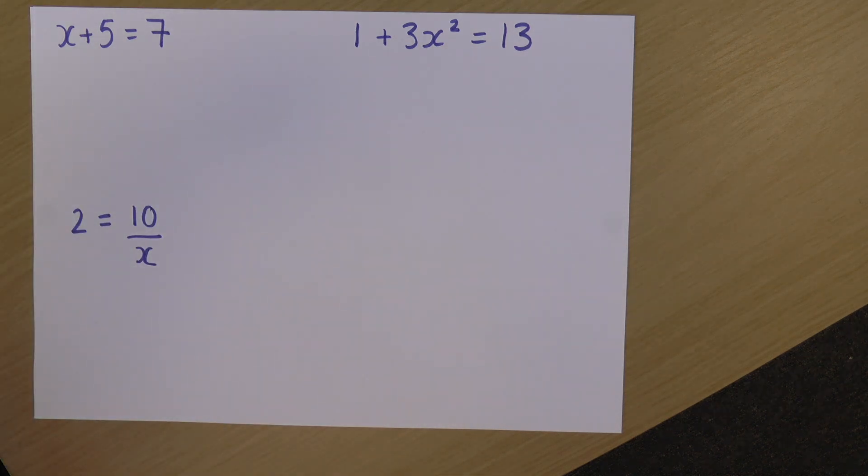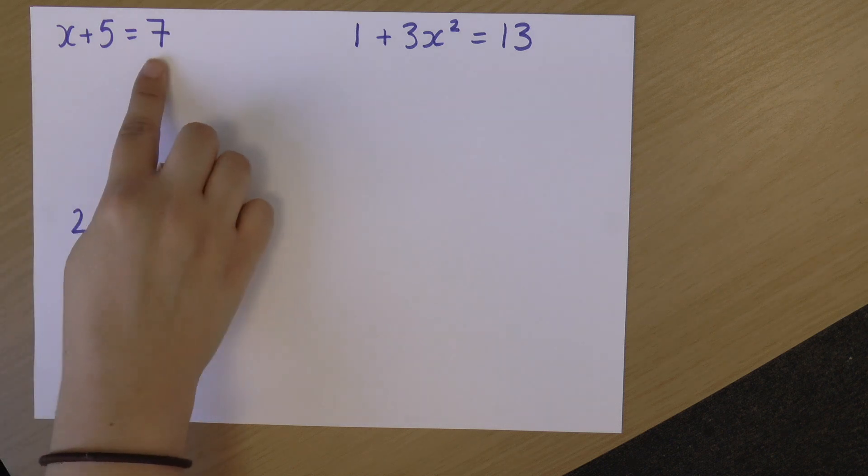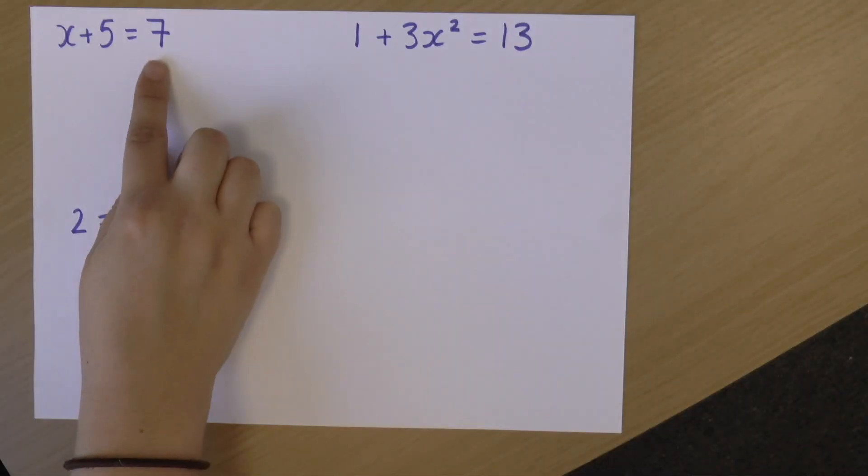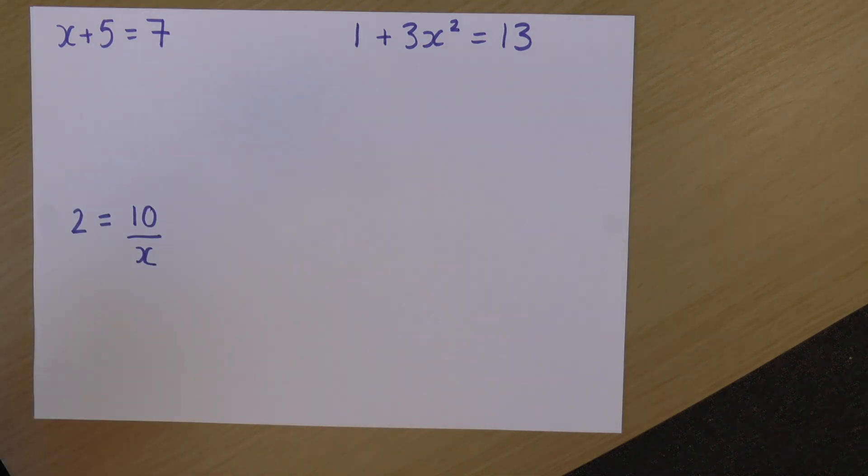So the reason I'm rearranging these equations is to find out what x is. There are a number of ways I can find x. For example, this first one, I'm saying x plus 5 equals 7. Now I could just say to myself, what plus 5 equals 7? And that might give me the answer straight away. However, sometimes for more complicated ones, like this one here, I may have to rearrange my equation in order to get x by itself, which will give me an answer.